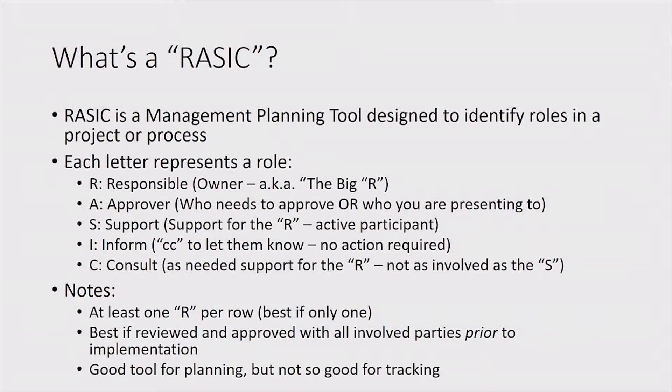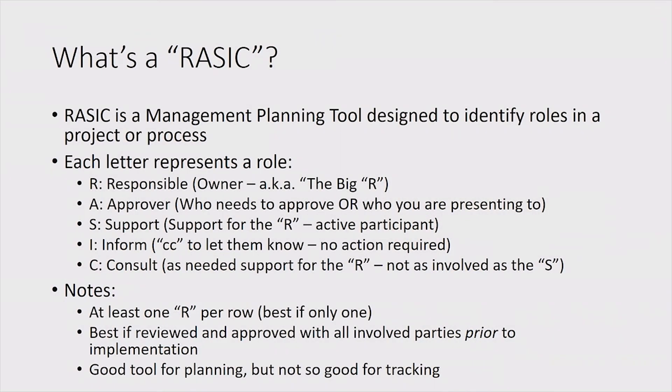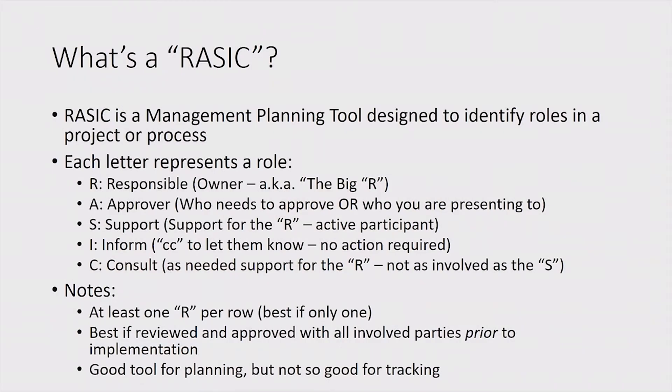The A is the Approver, the person to whom we present. The S is Support — if the person with the big R has a meeting every week, the S is there to support at every meeting. The I means 'I need to know about this, but I don't necessarily need to participate' — like CC. The C is Consult. The difference between S and C: the S is always there, the C is as required only. Technically the C is not part of the team, but is pulled in when needed. You put one task per row and try to have at least one R per row.